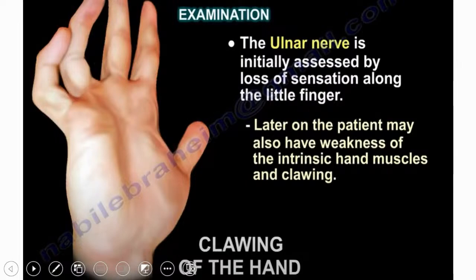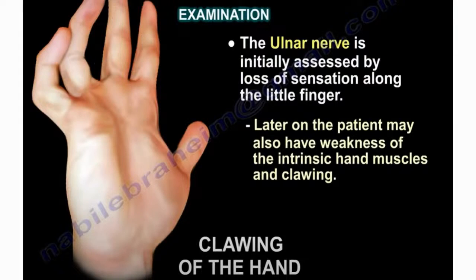Clawing of the hand — particularly clawing of the fourth and fifth fingers — occurs from an ulnar nerve injury or ulnar nerve palsy, especially a low ulnar nerve injury below the elbow. This happens because of weakness of the intrinsic hand muscles, while the flexor digitorum profundus to those two fingers continues pulling them into flexion.